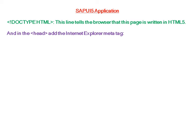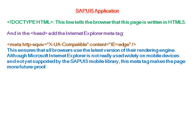DOCTYPE HTML — this line tells the browser that this page is written in HTML5. In the head, add the Internet Explorer meta tag. This ensures that all browsers use the latest version of their rendering engine. Although Microsoft Internet Explorer is not widely used on mobile devices and is not yet supported by the SAP UI5 mobile library, this meta tag makes the page more future-proof.